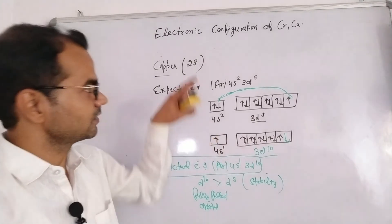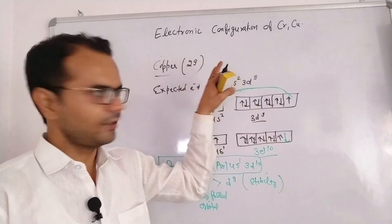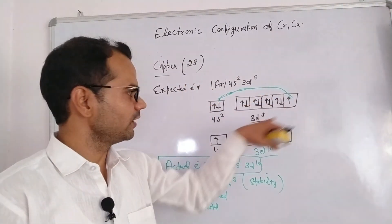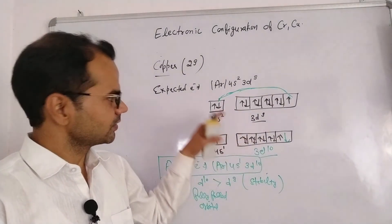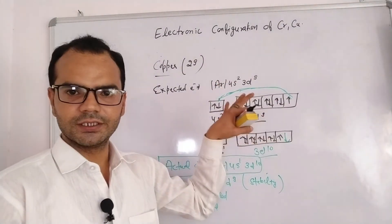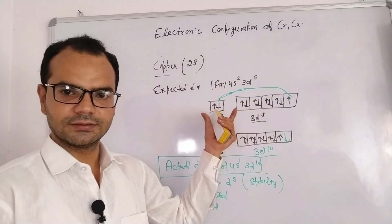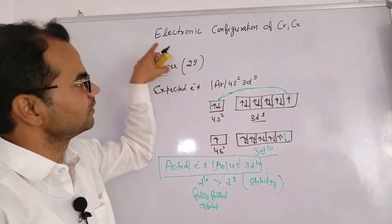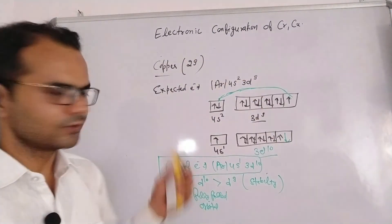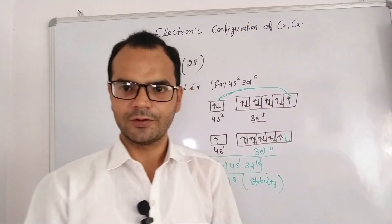These are the two elements that violate the normal electronic configuration rules. They acquire a stable electronic configuration by shifting one electron from the 4s orbital to the 3d orbital, due to their comparable energy. That's it for the exceptional electronic configuration of chromium and copper. I hope you understood. Keep exploring my channel for further content.